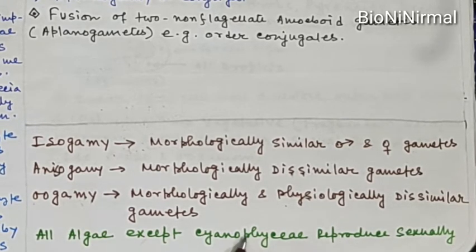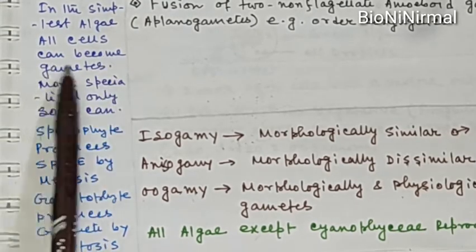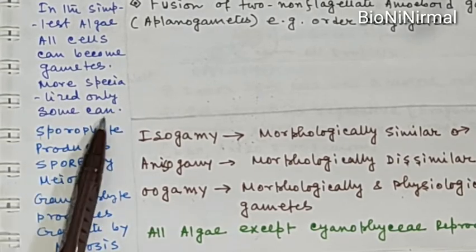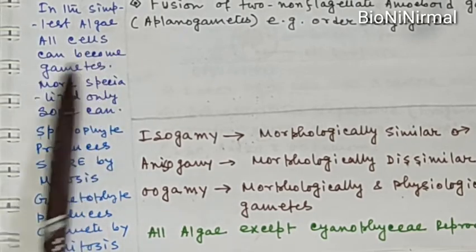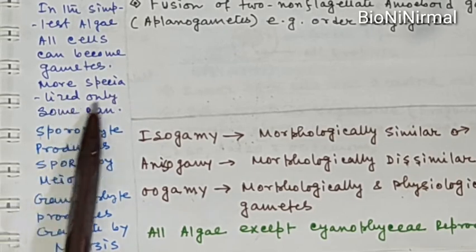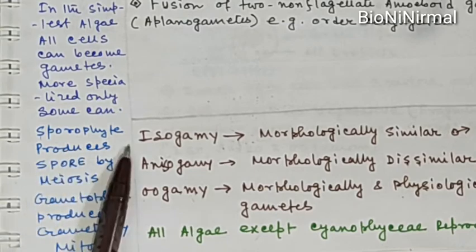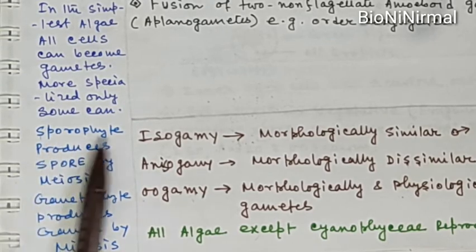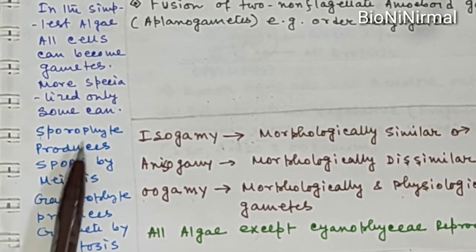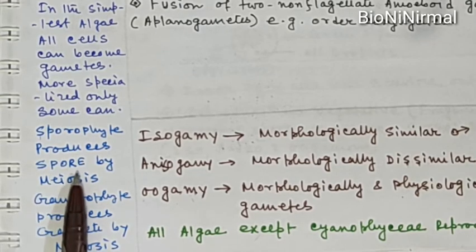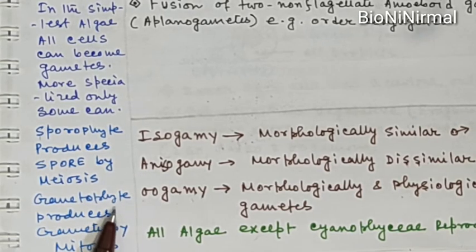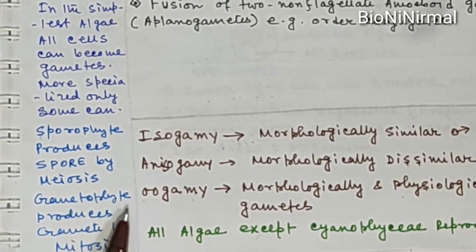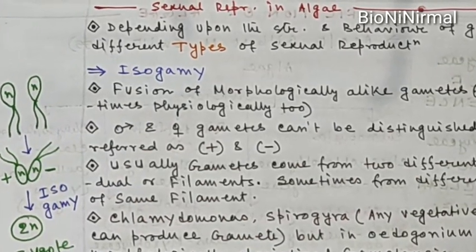Cyanophyceae cannot reproduce sexually; all other algae reproduce sexually. In the simplest algae, all cells can become gametes, but in more specialized algae only some cells can. Sporophyte produces spores by meiosis — this is very important. In the plant life cycle, the sporophyte stage is always diploid and produces spores by meiosis. The gametophyte is always haploid; since the spore is haploid it is the first cell of the gametophyte. Gametophyte produces gametes by mitosis since it is haploid and meiosis is not required.